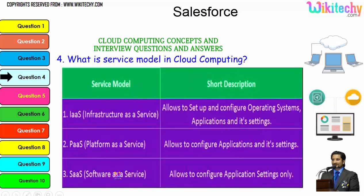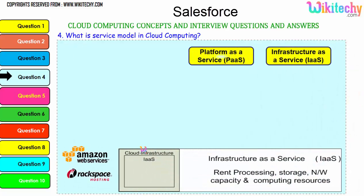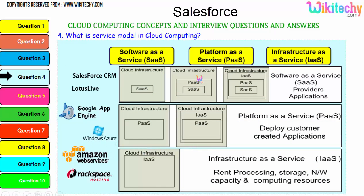The major service models are three. The first is infrastructure as a service — you are allowed to set up and configure the operating system, application, and its settings. You will be given a server and can put whatever you want, including a different operating system. Platform as a service — you will be allocated a specified operating system and can put any applications and settings. Software as a service — you will be given software and can configure whatever application settings you want.